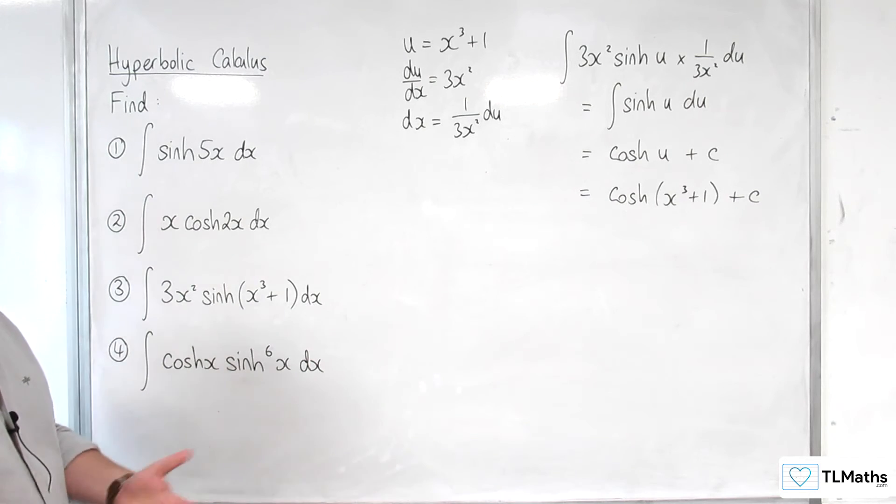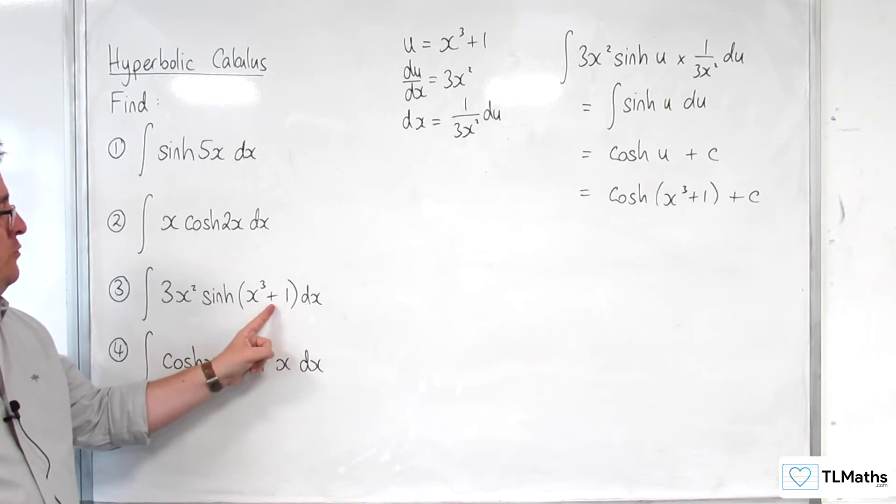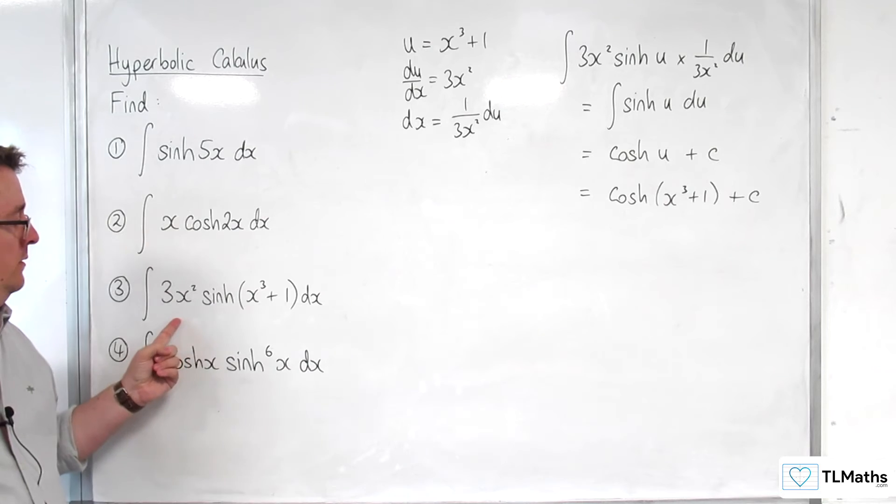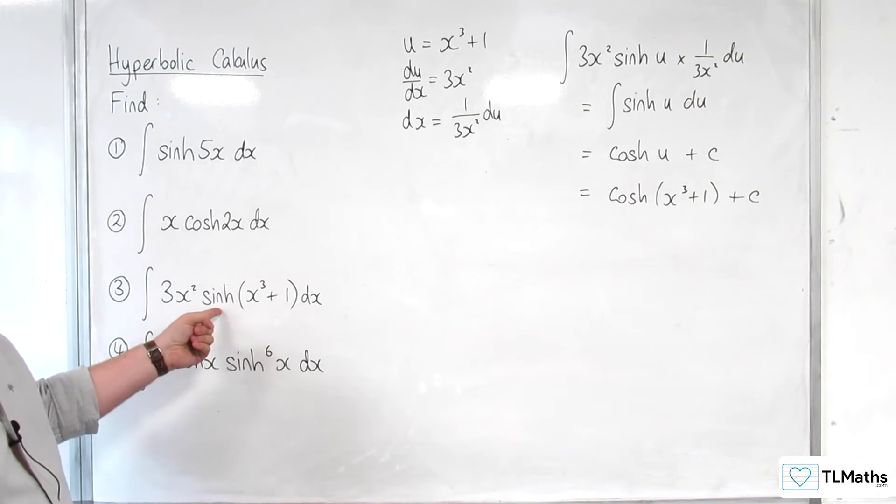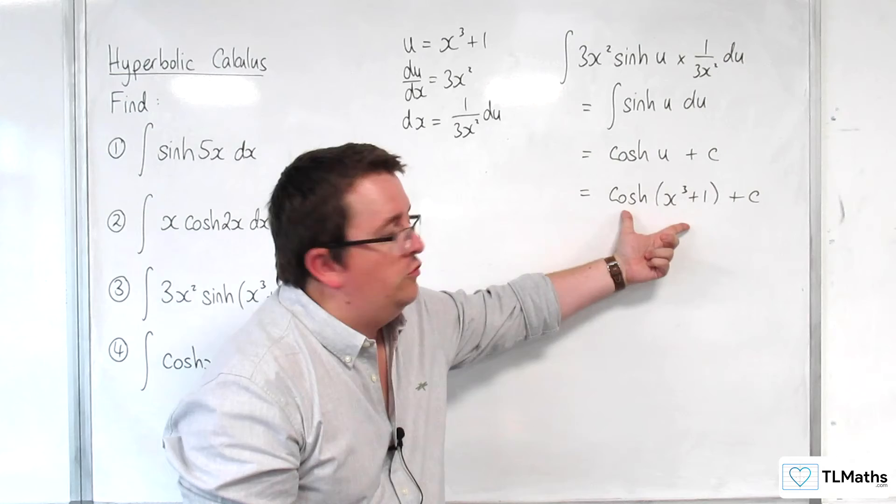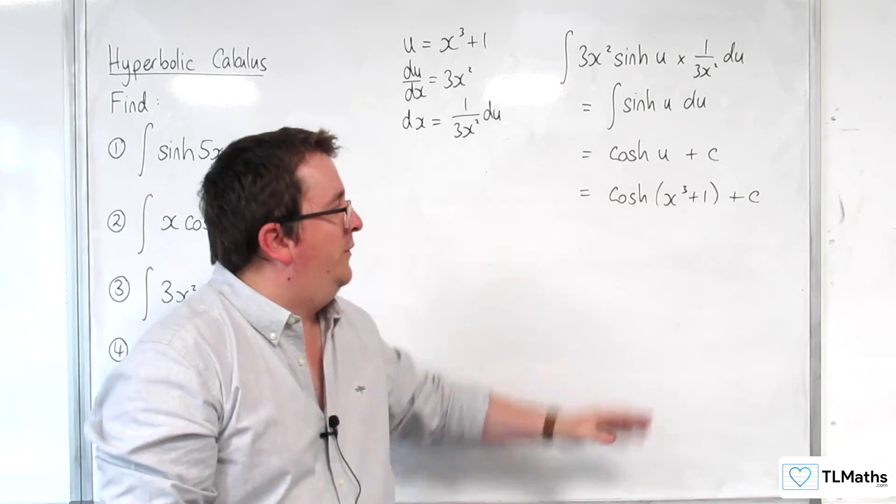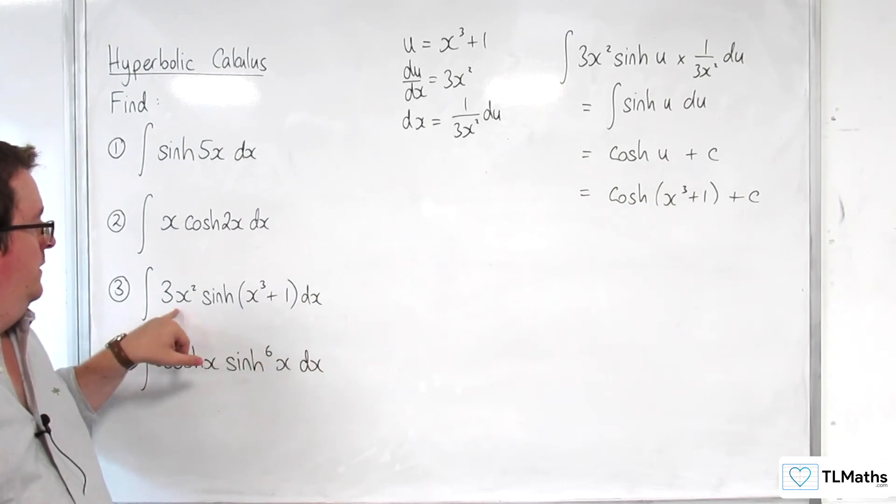So reversing the chain rule, because you've got the derivative of the interior function outside, sinh integrates to cosh. It's just going to integrate directly to that, because that differentiates back to this.